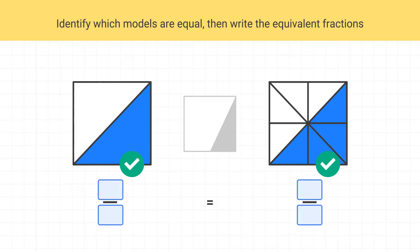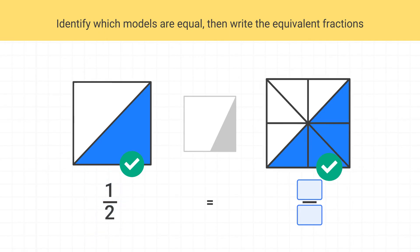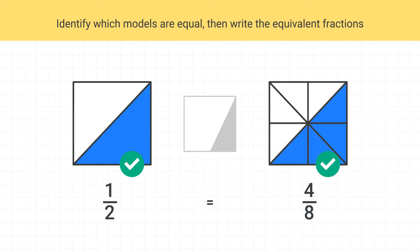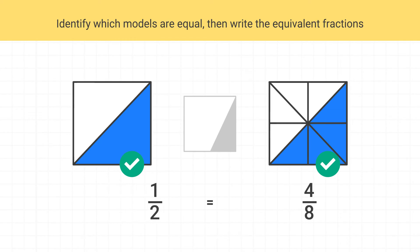Next, let's label each of these fractions. What fraction is this? One piece is shaded out of a total of 2, so this is one half. What about this model? Four pieces are shaded out of a total of 8, so this is four eighths. We can say that these are equivalent fractions, and we can write that one half is equal to four eighths.